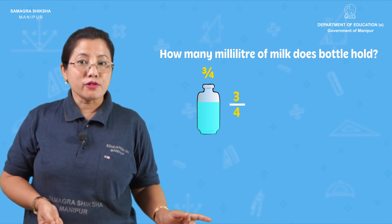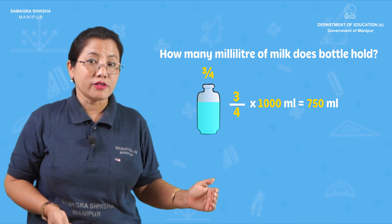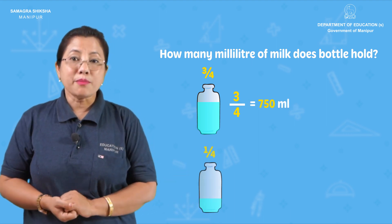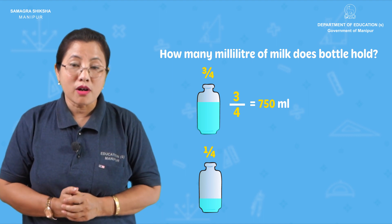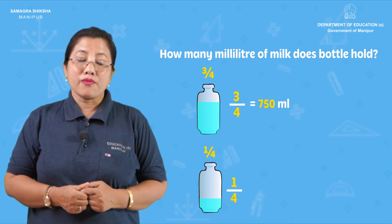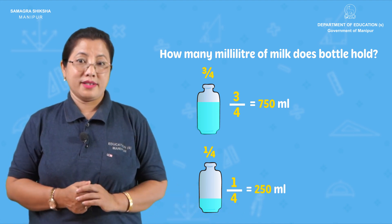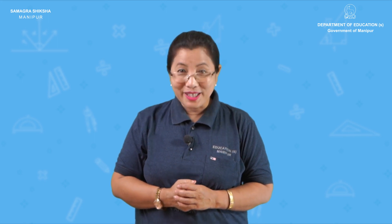The second bottle is 750 ml. Then 1 by 4 of a litre is equal to 1 by 4 into 1,000 ml, which equals 250 ml. And 1 by 5 of a litre is also discussed.